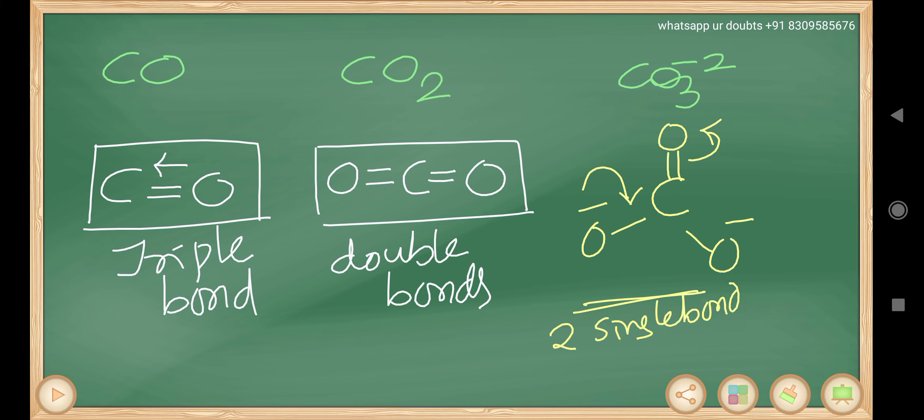Single bonds are longer than double bonds than triple bonds. So, carbon oxygen bond length increasing order is triple bond, CO is minimum, double bond carbon dioxide is next, carbonate, there are two single bonds and one double bond. So, this is the longest one.